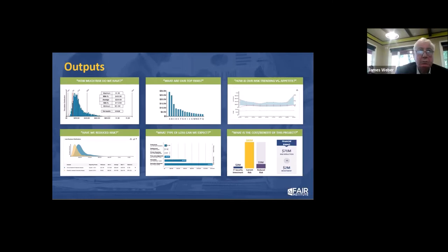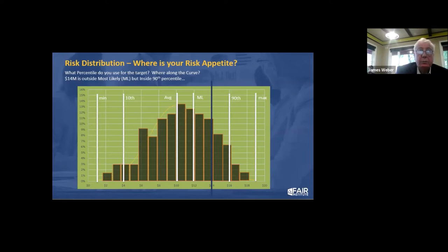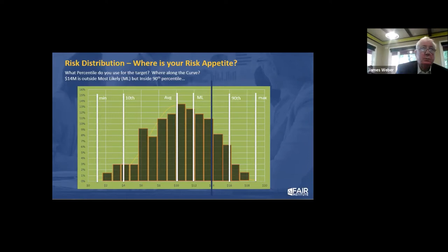This is another view of a normal distribution curve showing the samples and where the line falls. Keep in mind risk has two components: a vulnerability and a magnitude. If you want to manage to $14 million, is it above or below your most likely value? If you're managing to the 90th percentile, you need to know where along the curve you're targeting — for example, managing everything with less than a 10% or 5% vulnerability at the $14 million level.